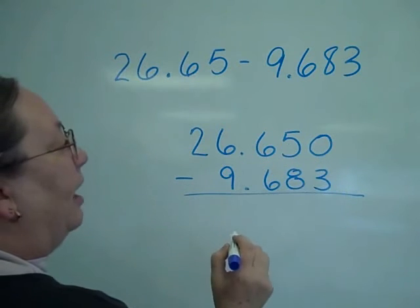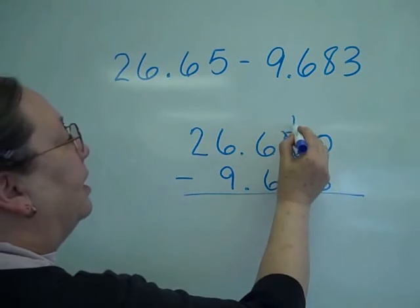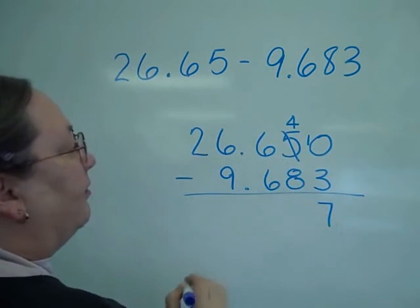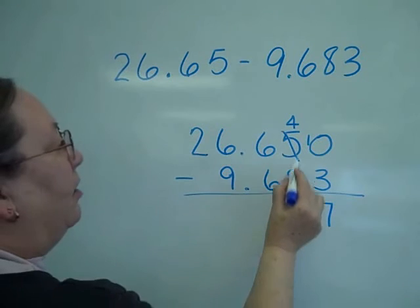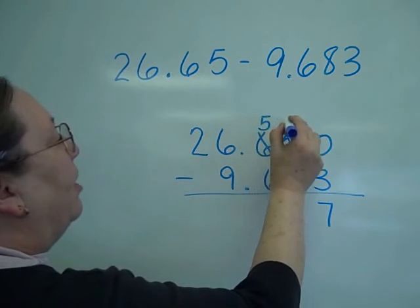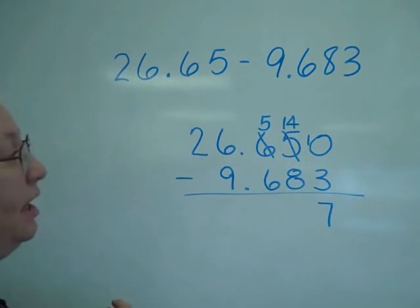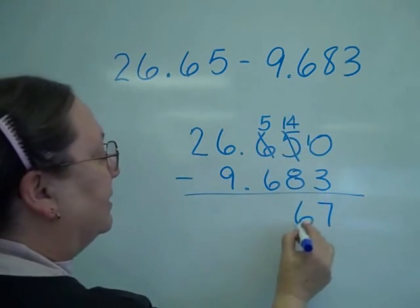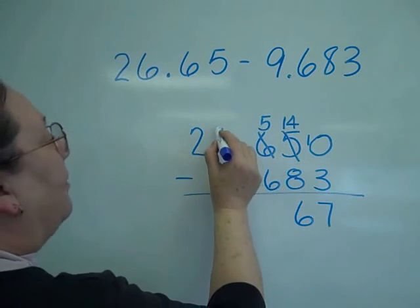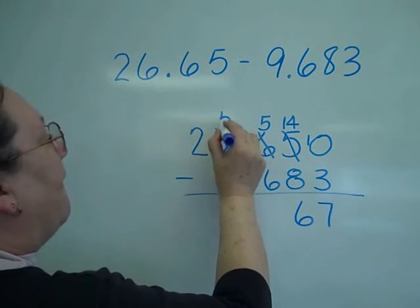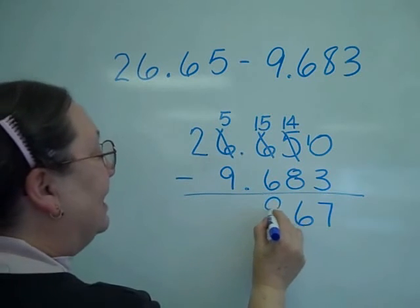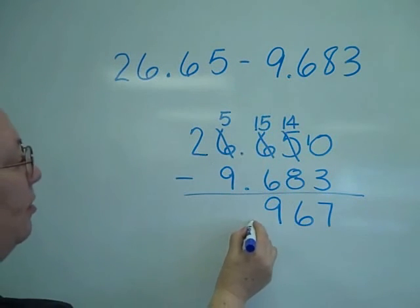Three from zero, I can't do it. I go next door and I have something I can borrow from. Makes this a ten. Minus three is seven. Eight from four, can't do it. So I'm going to come next door, makes this a five, comes over as a fourteen. Fourteen minus eight is six. Six from five, oh my goodness, did I take a bad problem. I'm going to have to come next door to borrow. And that makes that fifteen minus six is nine. Decimal comes straight down.